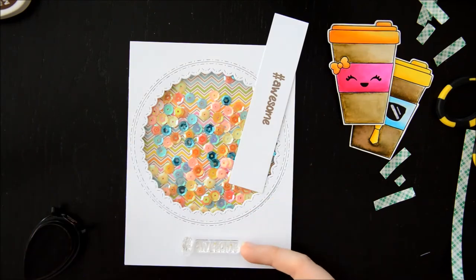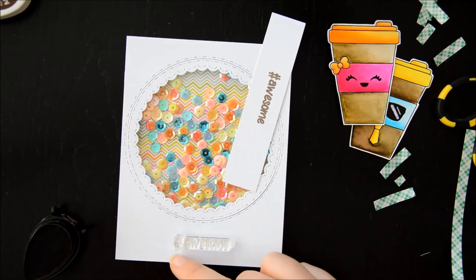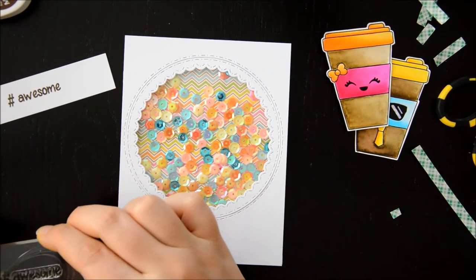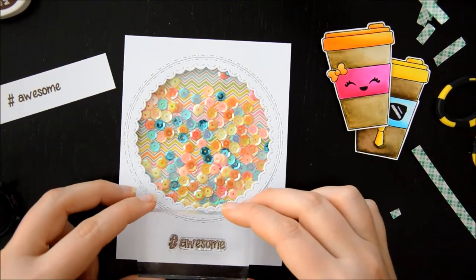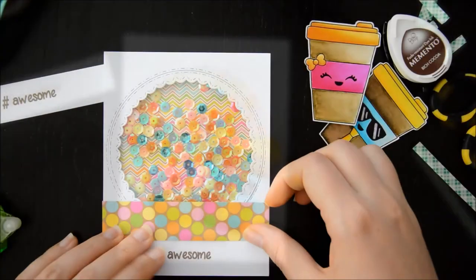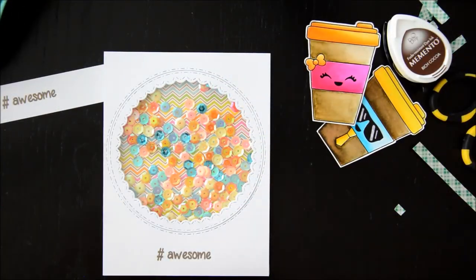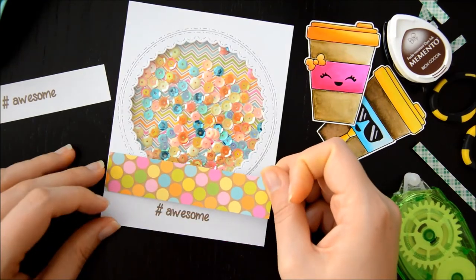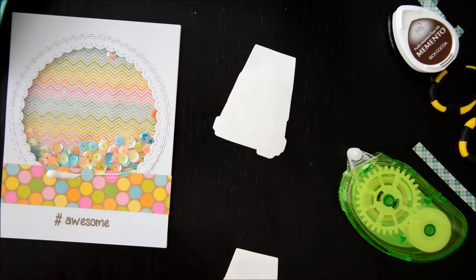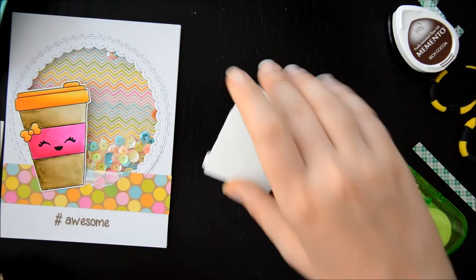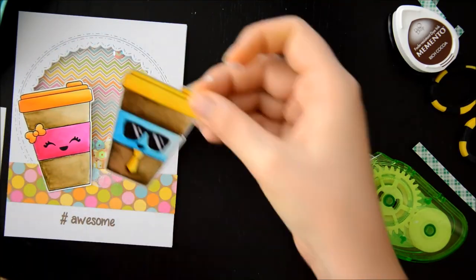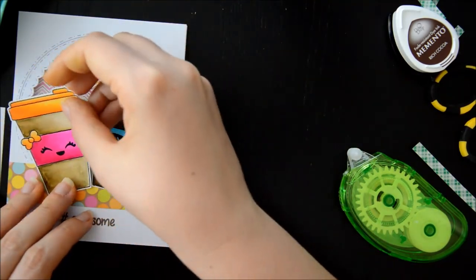For the sentiment, I decided to use the hashtag awesome sentiment, because I thought it was really fun and perfect for this card, and this comes from the Crafting Desert Divas Tiny Sentiments set, and I stamped it on my card using my Memento ink in rich cocoa, and as a final piece of embellishment, I decided to use a strip from that same Doodlebug Hello Sunshine paper pad to sort of ground my cups, and finally I attached them to the card front using some liquid glue.